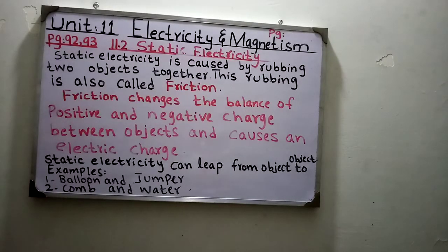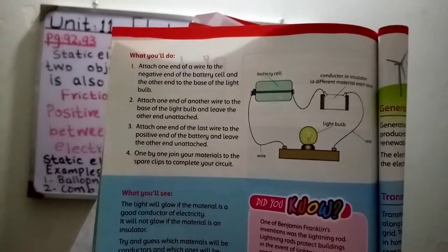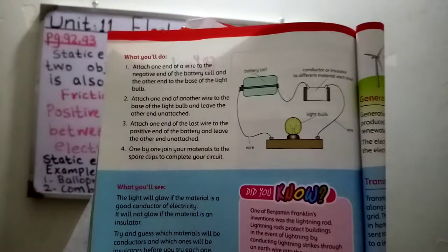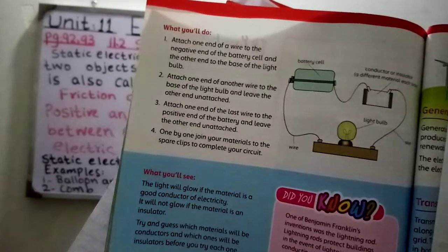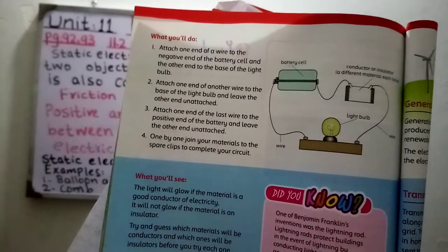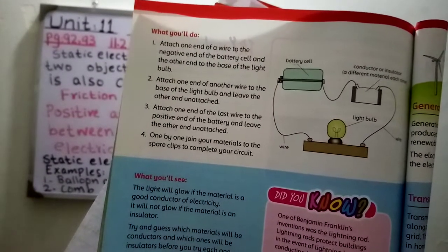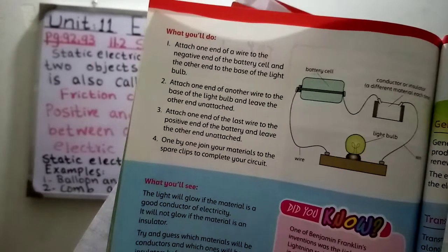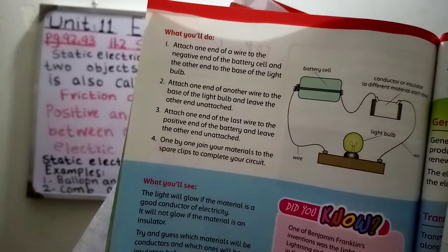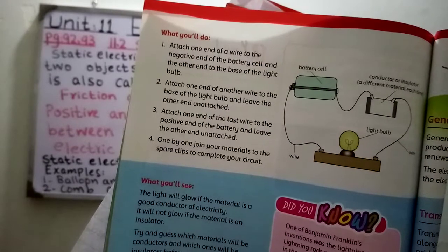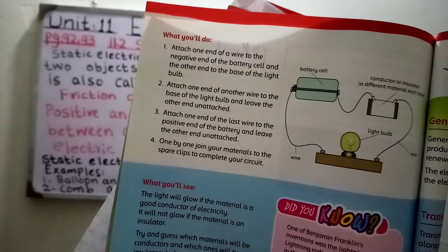We will move to the experiment to see how electricity conducts in conductors but not in insulators. How can we conclude this? By performing the experiment. Attach one end of a wire to the negative end of the battery cell and the other end to the base of the light bulb.